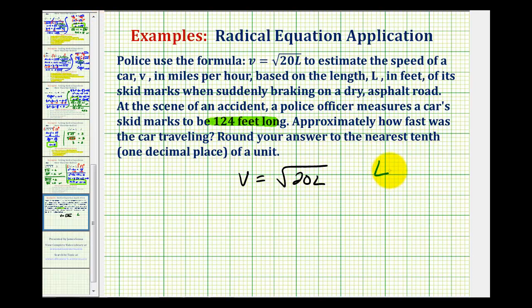So they're telling us that L is equal to 124 feet and we want to determine the speed of the car. So we'll substitute 124 for L. We would have V equals the square root of 20 times 124. So V equals the square root of, this would be 2480.